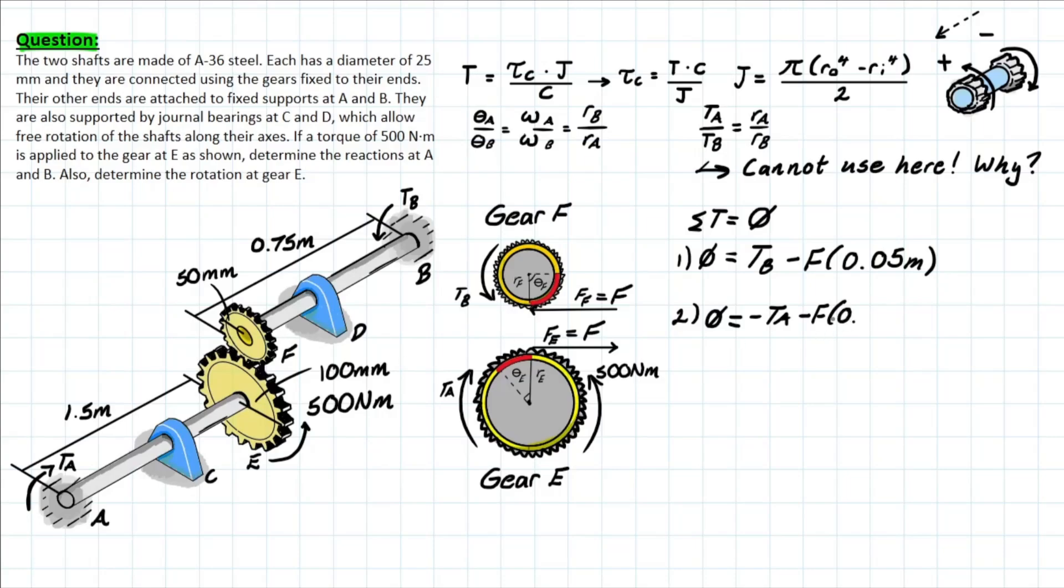We also have the force that's being applied times the distance away, which is that radius here of 100mm, so we're going to convert that right away to 0.1 meters. And that external torque, which is 500 N·m, and that's going to be positive.